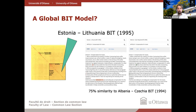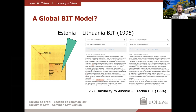We highlighted one comparison to the Albania-Czech Republic bilateral investment treaty, which is 75% similar to the Estonia-Lithuania BIT. Article 4 in these two treaties is really identical apart from two words. This opens up the possibility to provide a bird's eye view of the investment treaty universe and to find these patterns of commonalities that hitherto were just assumed or taken for granted.